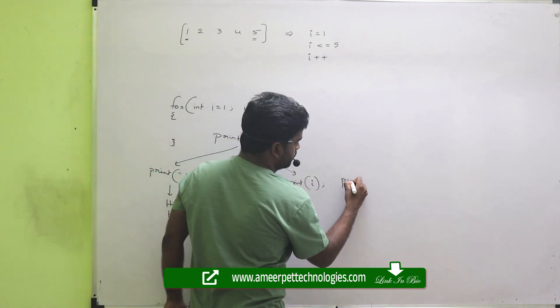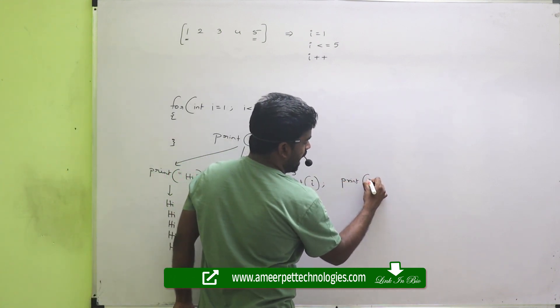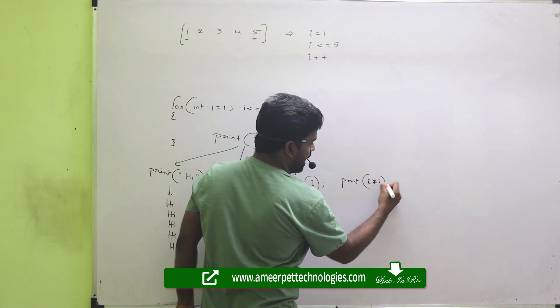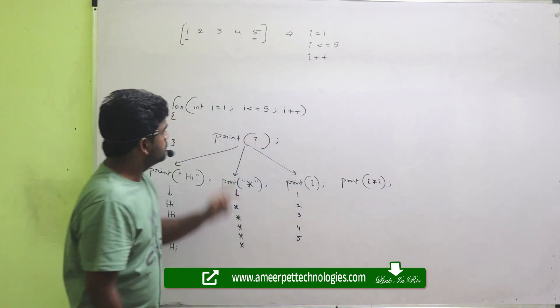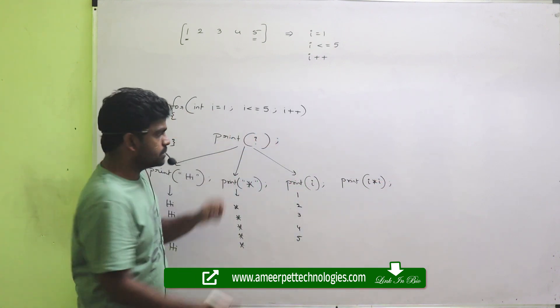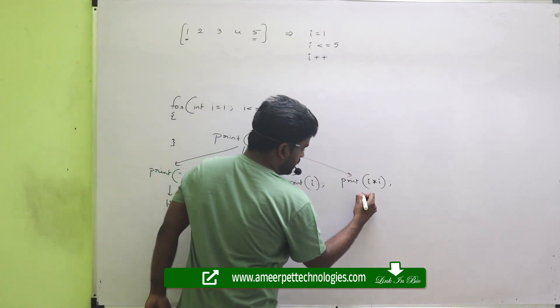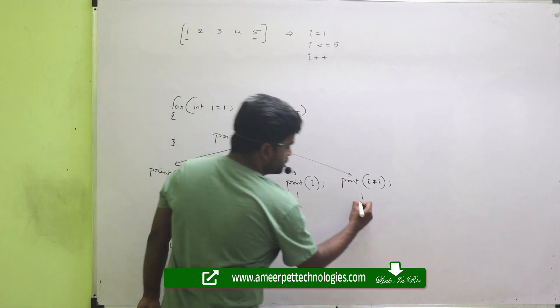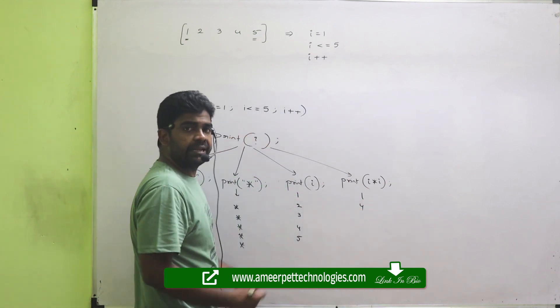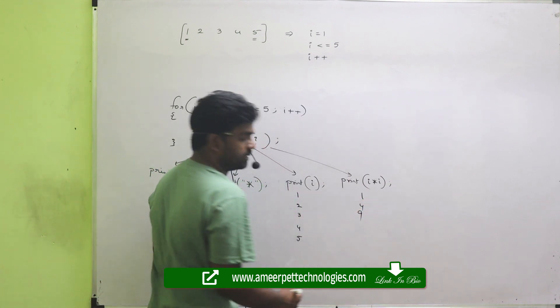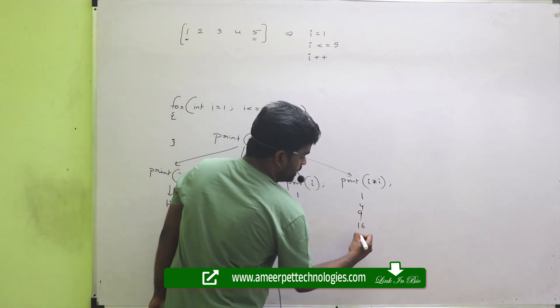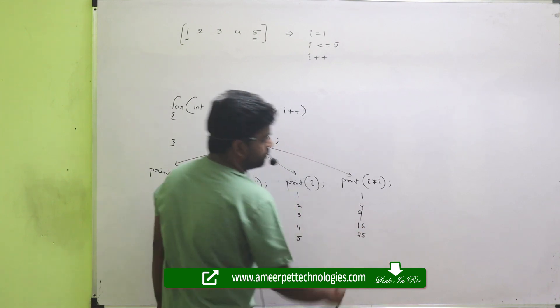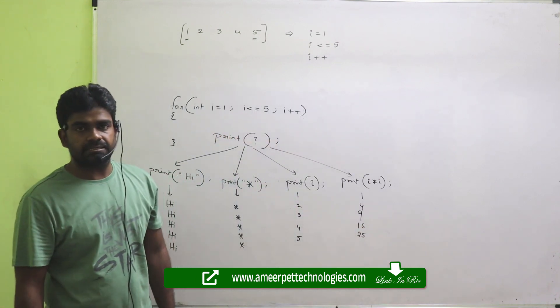Suppose if I am printing I multiplied with I. Nice idea. So what is that I value first? 1, so 1 into 1, 1 will print. 2 into 2, that is 4 will print. 3 into 3, 9 will print. 4 into 4, 16. 5 into 5, 25 will print.